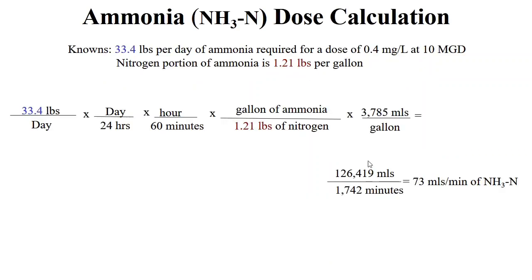Similar to earlier calculations, everything is the same except we have 33.4 pounds per day in the numerator and 1.21 pounds per gallon in the denominator. We cancel pounds, days, hours, and gallons, leaving mL per minute. 33.4 times 3,785 gives 126,419 in the numerator; 24 times 60 times 1.21 gives 1,742 in the denominator, resulting in 73 mL per minute of ammonia as nitrogen to feed 0.4 milligrams per liter at a plant operating at 10 MGD.